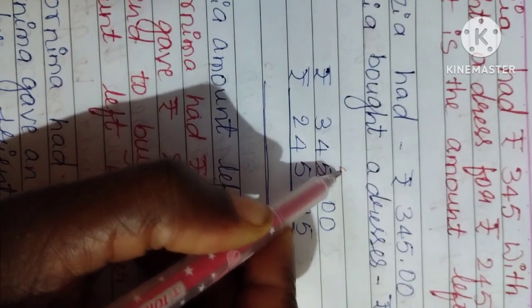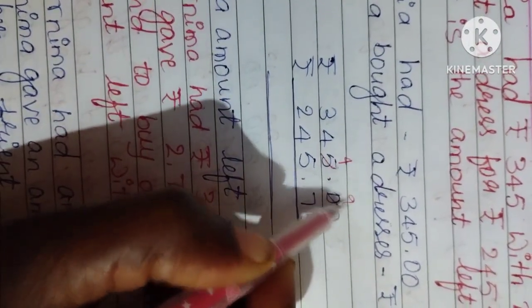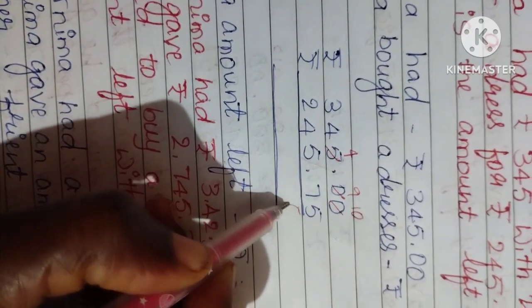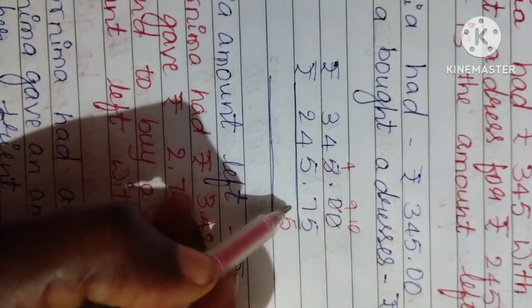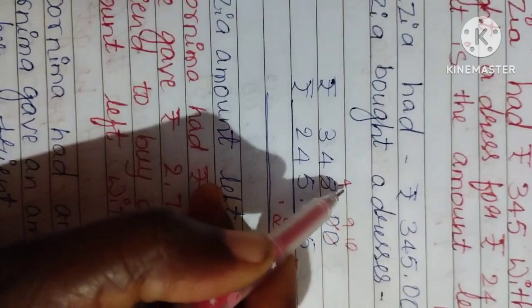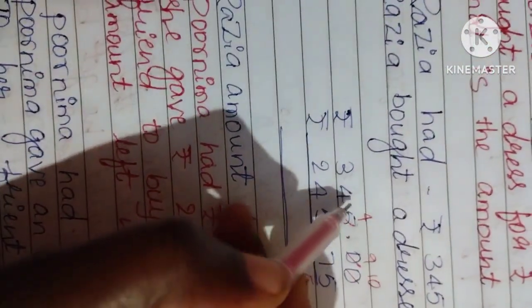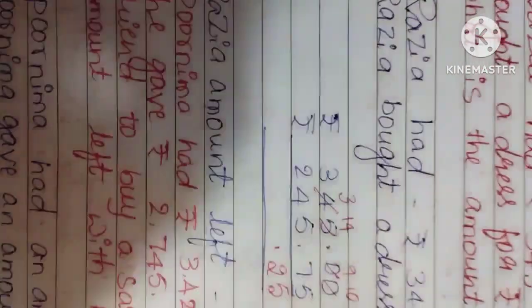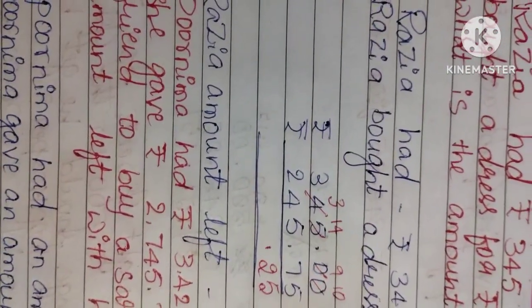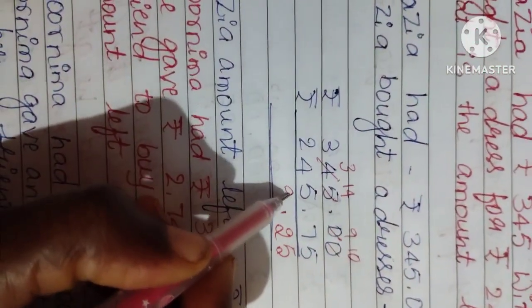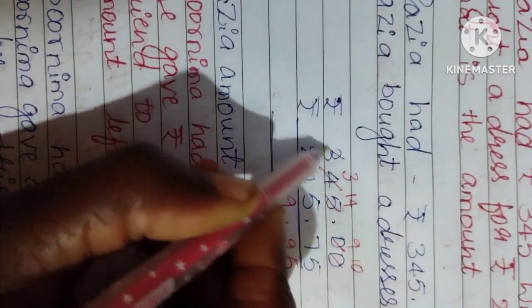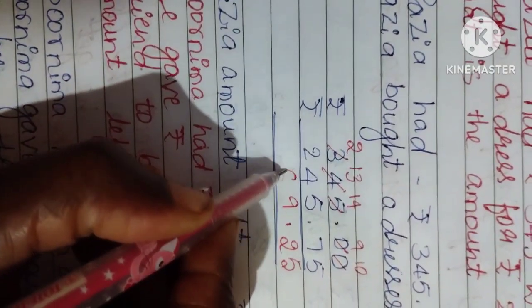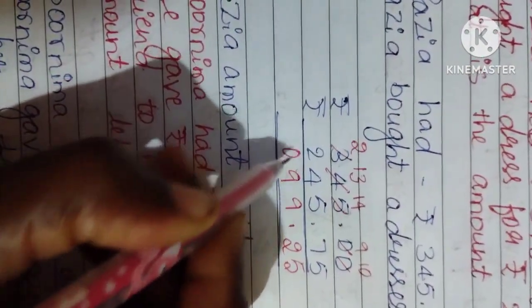We can't go. So you can take borrow: here 4, here 9, here 10. 10 minus 5 is 5. 9 minus 7 is 2. 4 minus 5 can't go. So you can take borrow from here, here 14. 14 minus 5 is 9. 3 minus 4 also can't go. So you can take borrow: 13 minus 4 is 9. 2 minus 2 is 0.